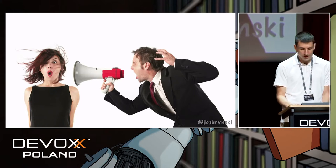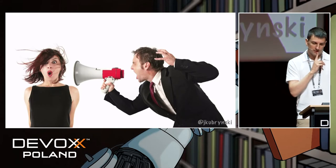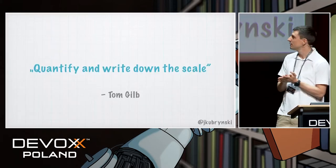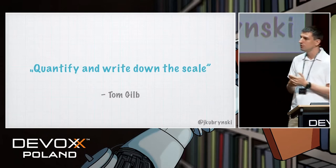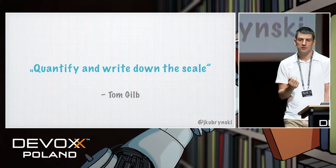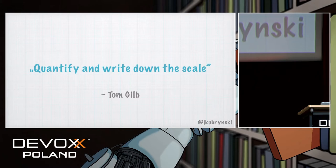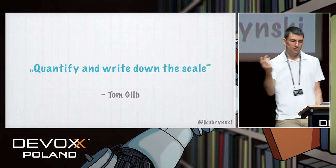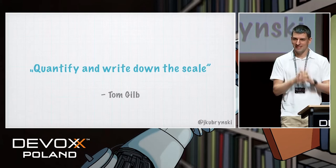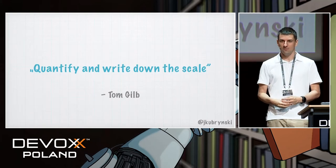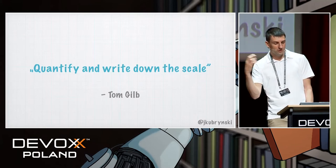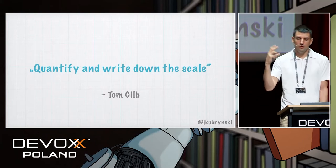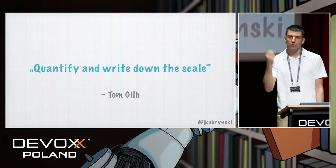We tried to do this, and it was much harder than expected. But we found Tom Gilb — I think the father of this approach — author of Evolutionary Project Management and the great book Competitive Engineering. He was repeating all the time: quantify and write down the scale. We said we want a great office. He said: put the scale on it. If you have problems with scaling something, it means you're not sure what you want to achieve. If you can quantify the requirement and put the scale on it, that's really, really good.